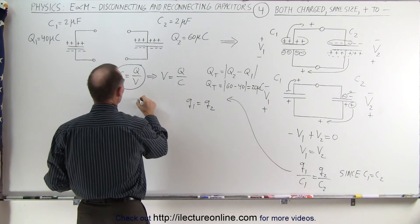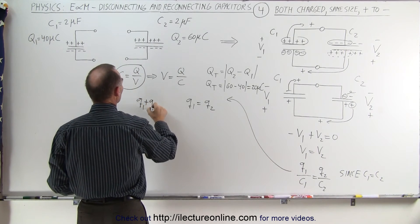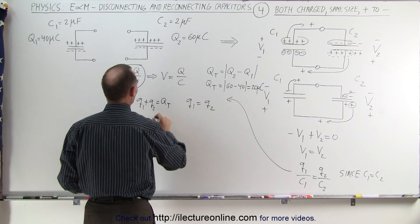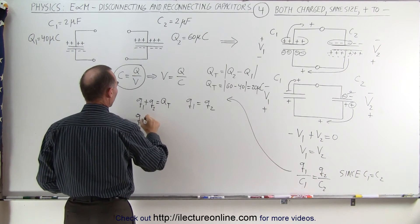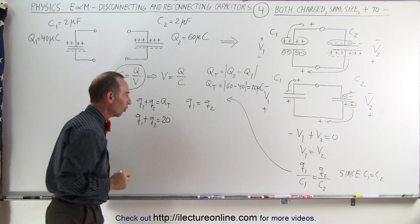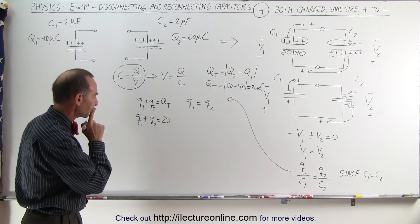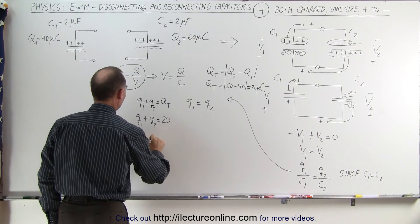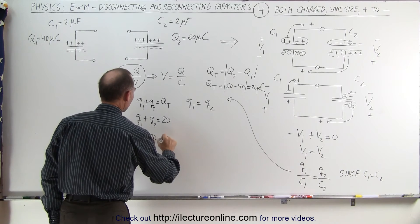We also know that Q1 + Q2 must equal Q total, which in this case is 20 microcoulombs. That means Q2 is equal to 20 minus Q1.